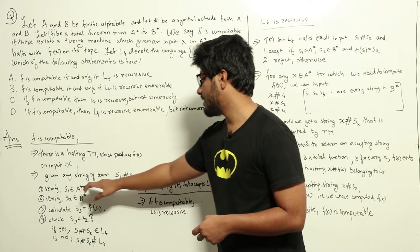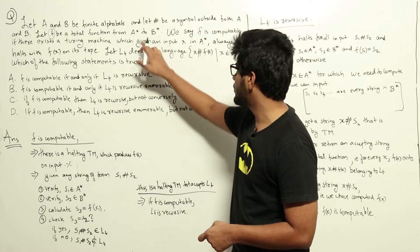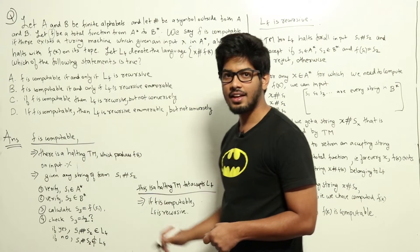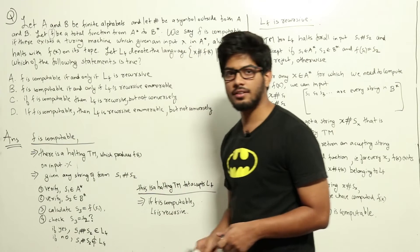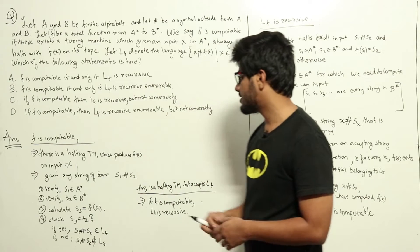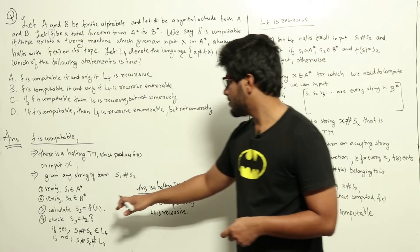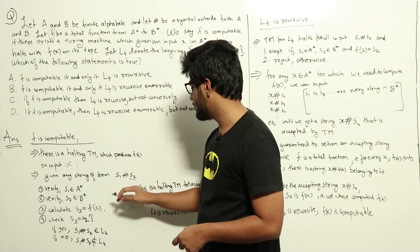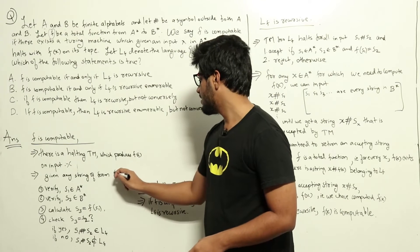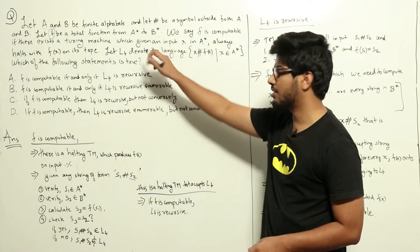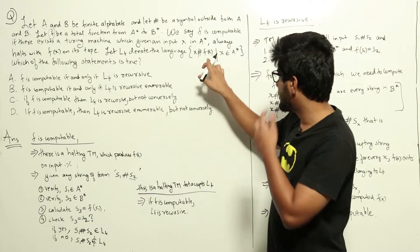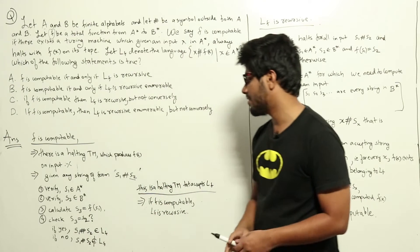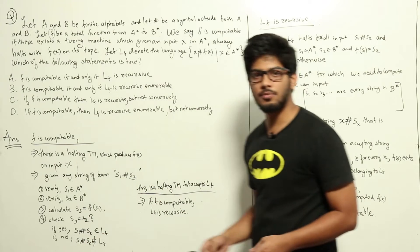We know s1 belongs to a-star, as verified. Since the function f is computable, we can give s1 to the Turing machine that computes f, and it will give us f(s1) — let us call this s3. Now check if s3 equals s2. If both are equal, then s1 hash s2 belongs to Lf by definition. If not, then s1 hash s2 does not belong to Lf.